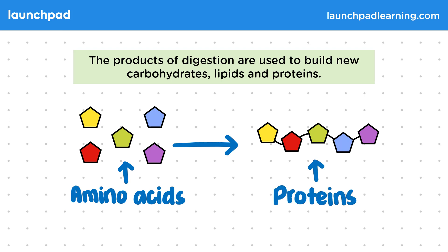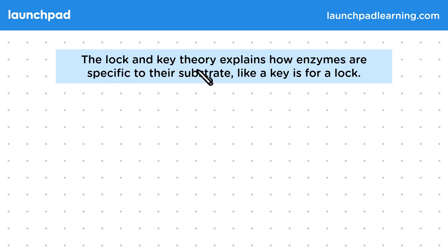It's important that you're able to relate your knowledge of enzymes to metabolism — that is, the reactions in the body that digest or synthesize different organic compounds like proteins, carbohydrates and lipids. The lock and key theory explains how enzymes are specific to their substrate, like a key is for a lock.